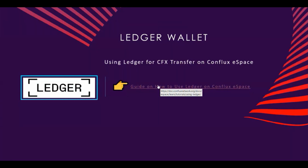Ledger is a hardware wallet that allows users to store private keys offline. With Ledger, you can manage your assets without exposing your private key to potential online threats. Both Fluent and MetaMask store your private keys in an encrypted way on your device, using the password you set up when you create the wallet. If someone gets your password, they could access your private keys. Hardware wallets solve this by keeping private keys offline, requiring a physical device to sign and approve transactions. The guide includes step-by-step instructions on how to use it.